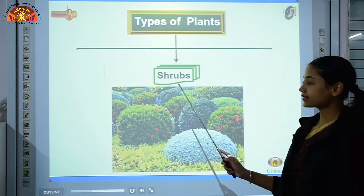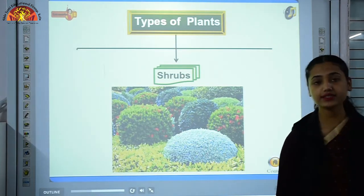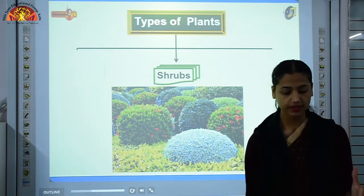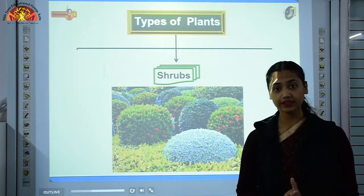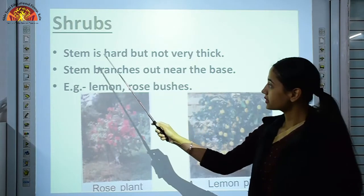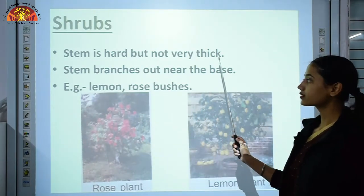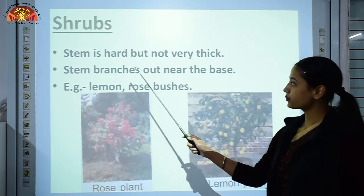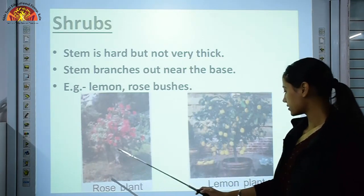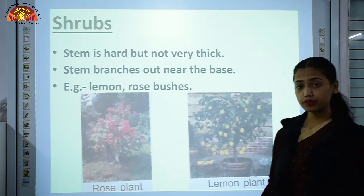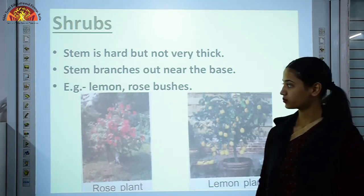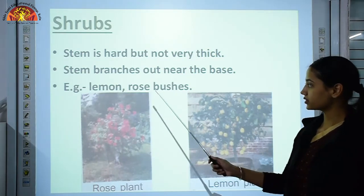The next category is shrubs. These are taller than herbs but shorter than tall trees. The stem is hard but not very thick. The stem branches out near the base. You have seen the plant of tulsi — that comes under the category of shrubs. Examples include lemon and rose bushes.